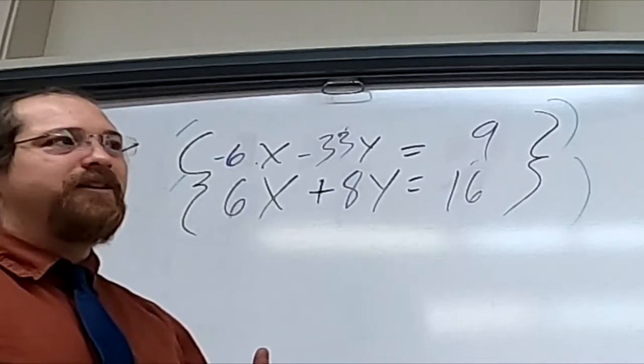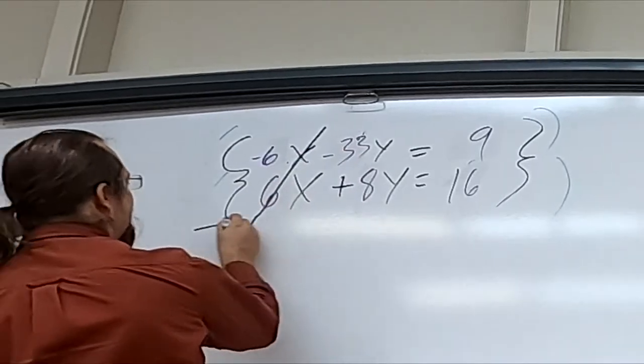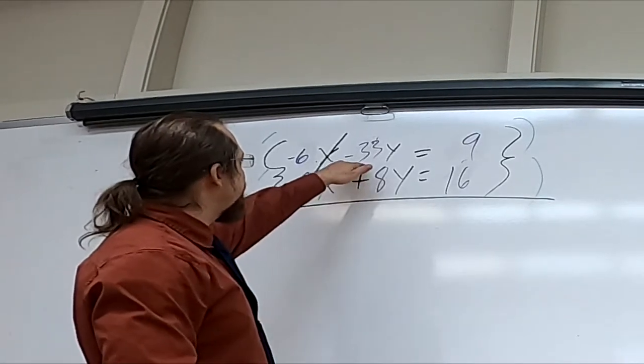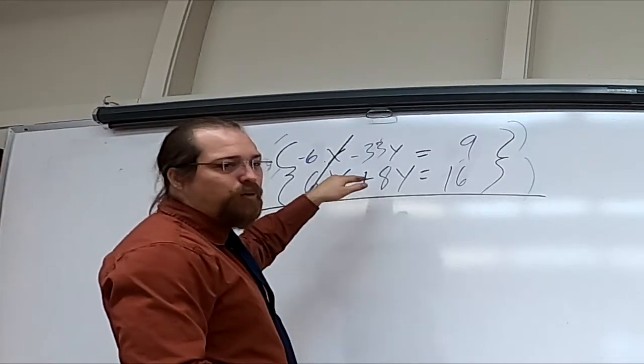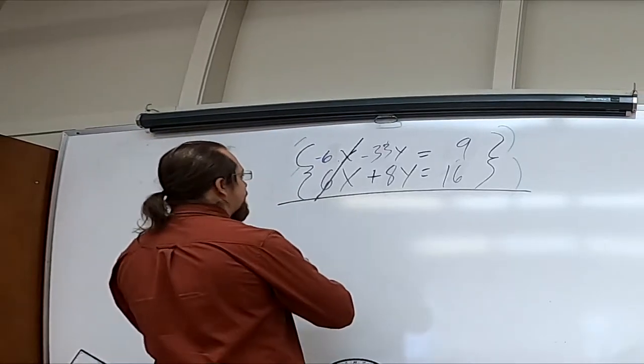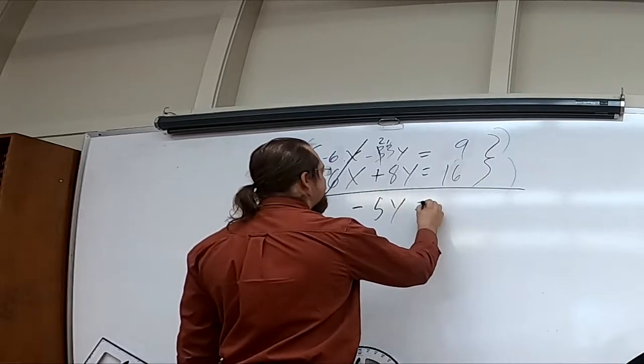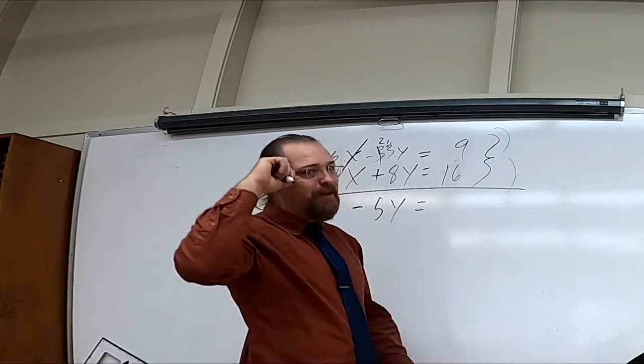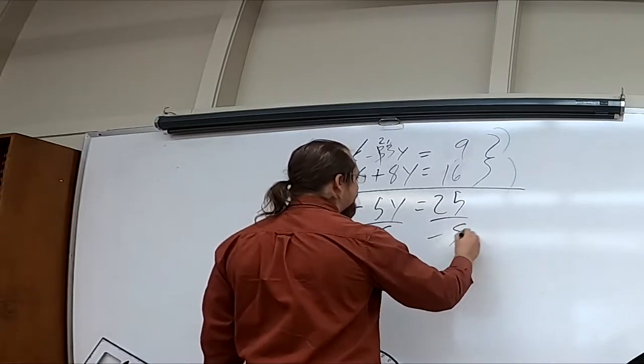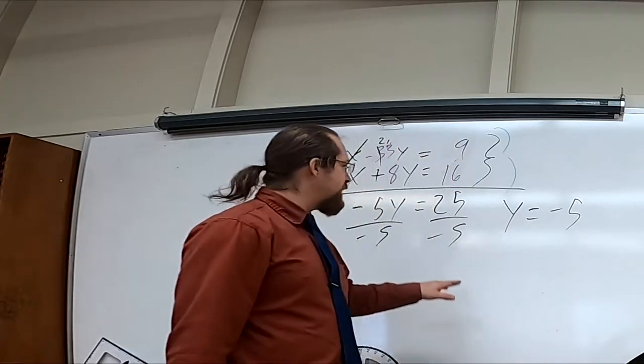So using what we're calling Isabelle's rule, I'm gonna line through these because they cancel. I'm gonna draw a line underneath because now I know I'm adding everything else together. Here we're looking at negative 33 plus 8 or you could look at it as 8 minus 33. Either way we're gonna end up with a negative as our final answer. 5y is equal to 16 plus 9, that's 25. So now I can divide both of these by negative 5 and this is gonna give me a y that's equal to negative 5.